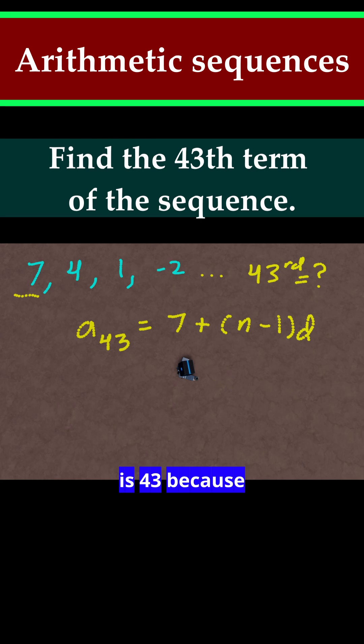Plus n minus 1 times d. And we know n is 43 because that's the term we want. And then d is just minus 3 as we found out. And as you'll see, it pretty much ends up being the same calculation as before.